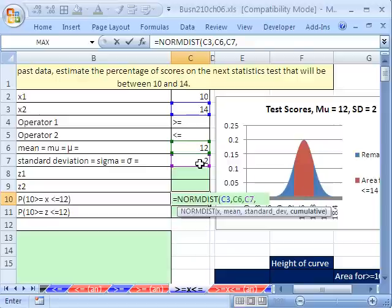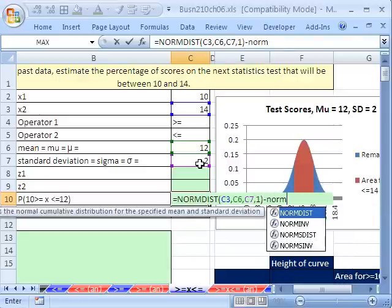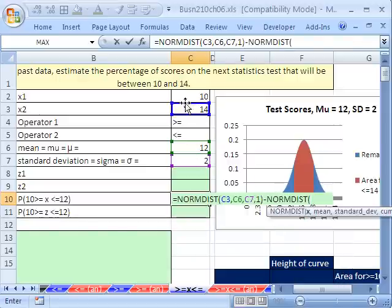Standard deviation, comma, 1. And then minus NORM.DIST, the smaller x, comma, mean, comma, standard deviation, comma, 1.